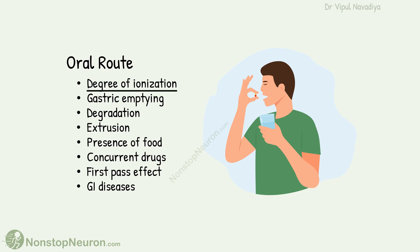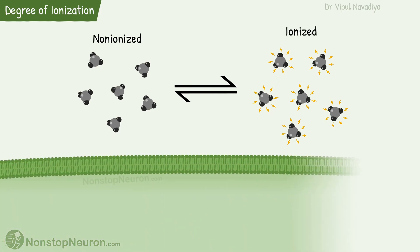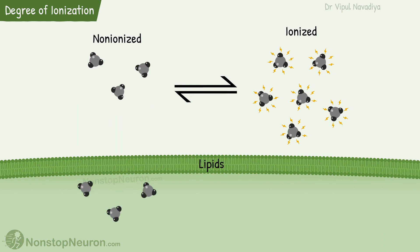First, let's talk about the degree of ionization. The drug molecules exist in two interconvertible forms: non-ionized and ionized. The biological membrane is made up of lipids and is permeable to only non-ionized molecules. So only the non-ionized portion of the drug is absorbed. Ionized molecules, on the other hand, cannot be absorbed.